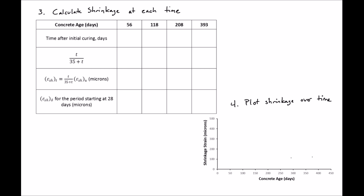We'll start with our concrete age. We aren't as much concerned with our concrete age as we are the time after the initial curing. If we have a 7-day moist cure, then our time after curing will be 7 days less than our concrete age. So we'll have an age of 49 days after curing, 111, 201, and 386.